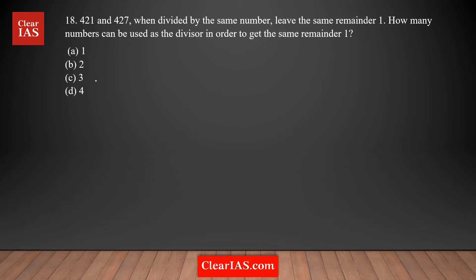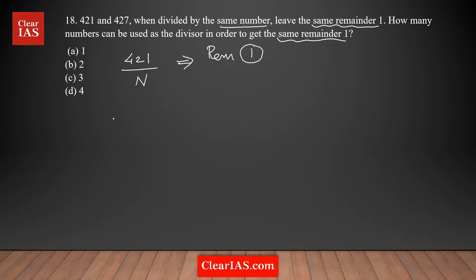Let's analyze question 18: 421 and 427, when divided by the same number, leave the same remainder of one. How many numbers can be used as a divisor in order to get the same remainder? So I need to find how many possible values of n are there. Let me analyze the question in more detail.